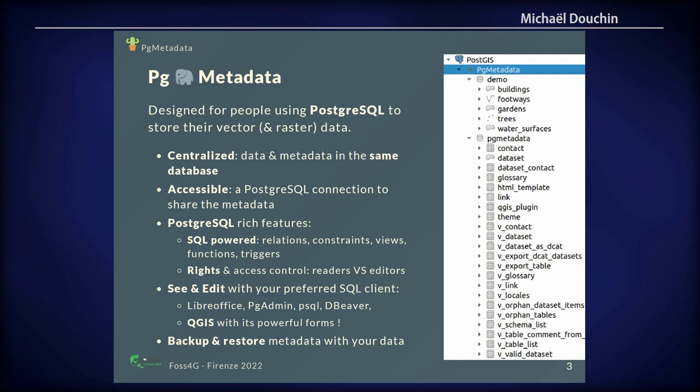You can benefit from PostgreSQL's rich features like relations, constraints, triggers, and views. So you can use the logic of PostgreSQL to help create or update your metadata. You can also use write and access controls — who can edit, who can read the metadata. And obviously you have many clients: you can use QGIS, PGAdmin, or the command-line PSQL tool. It's also very easy to back up and restore your metadata — you just back up and restore your PostgreSQL database.